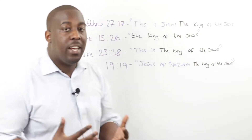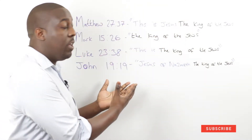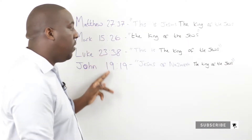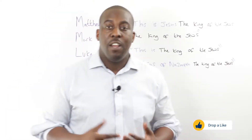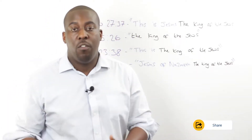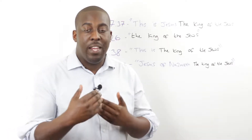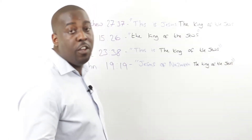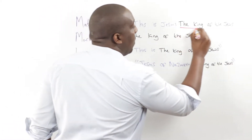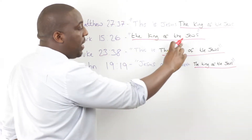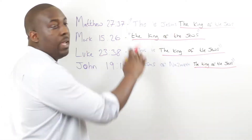In the four different gospels we get insights into the sign on the cross, and I've written out the chapter reference from each different gospel and what was actually written on the sign. The first thing you should realize — and I've highlighted it in black — is that in every single account it says 'the King of the Jews.' Every single example says 'the King of the Jews.'